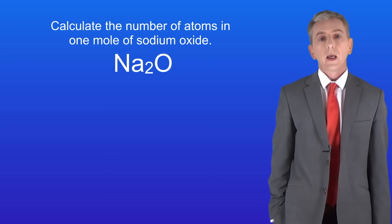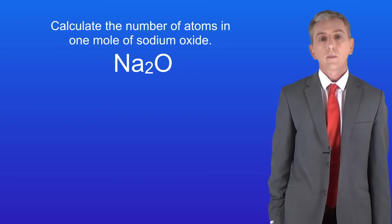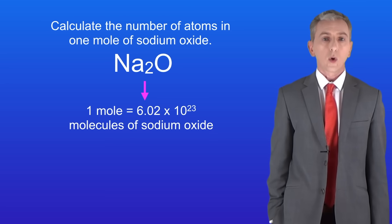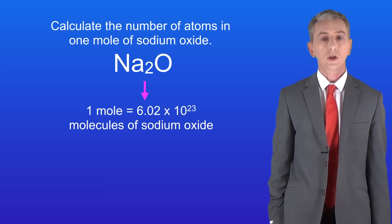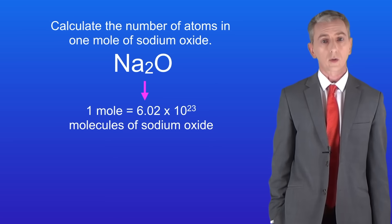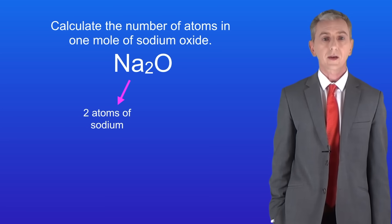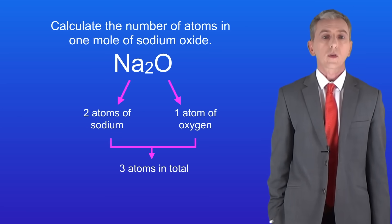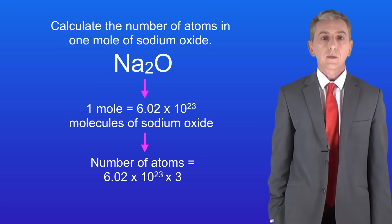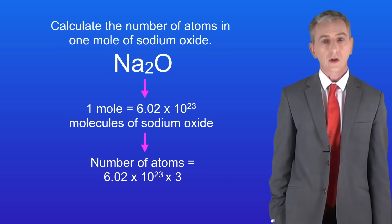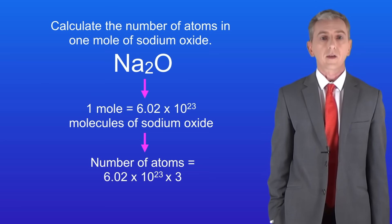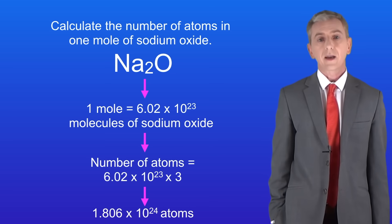Here's one for you to try. Calculate the number of atoms in one mole of sodium oxide Na2O. Pause the video and try this yourself. Okay, one mole of sodium oxide contains 6.02 times 10 to the power of 23 molecules of sodium oxide, in other words Avogadro's constant. Looking at the formula of sodium oxide, we can see that one molecule contains two atoms of sodium and one atom of oxygen, in other words three atoms in total. Therefore we need to multiply the number of molecules of sodium oxide by three to get the number of atoms in one mole of sodium oxide. This gives us a final answer of 1.806 times 10 to the power of 24 atoms.